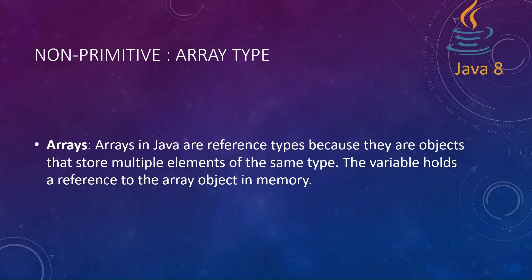Let's connect arrays to the primitive type int. When we have int, there is a variable — let's say the variable name is 'number' — and a value, say 123. This int has one value in it. But if I want this int identifier 'number' to hold more than one value — one, two, three, four, five — that's where arrays come in.